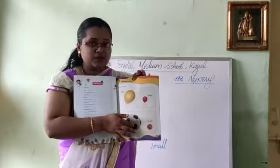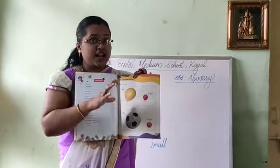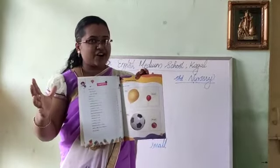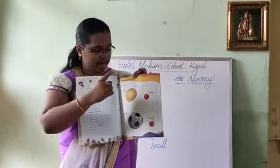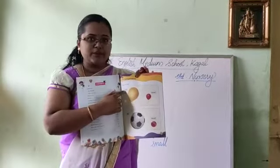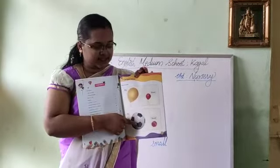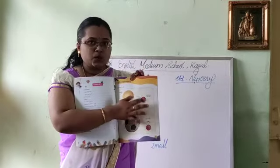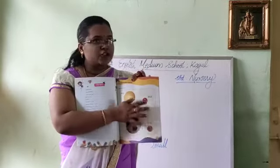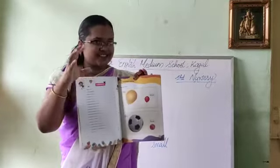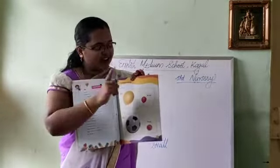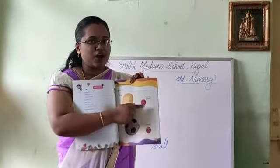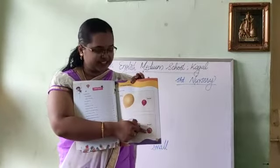The objects which are large in size are called big objects or big things. The objects which are not so large are called small things or small objects.